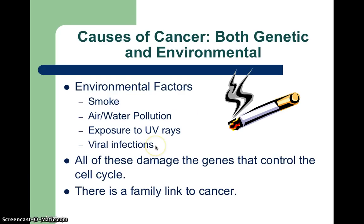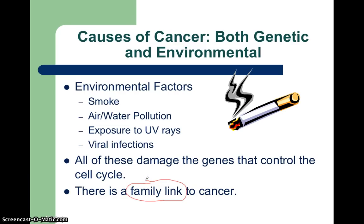Viral infections can get in there too — viruses get in and recode what a cell does. If a virus gets in and reprograms and damages the DNA of a particular cell, it can cause that cell to begin to divide uncontrollably. And then, of course, there's always that family history or family link to cancer. That's why family history is so important to medical professionals — they really want to see if it runs in your family and whether you're more prone to get certain types of cancers than others.